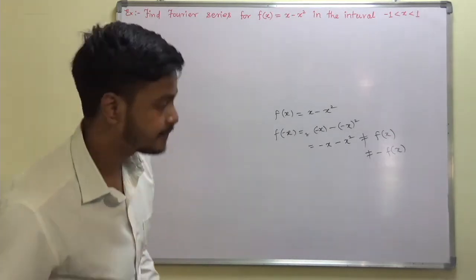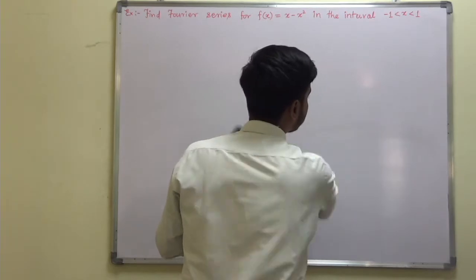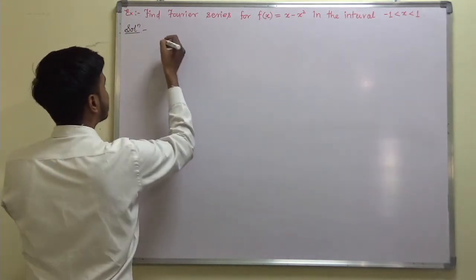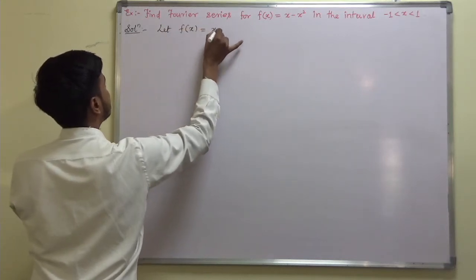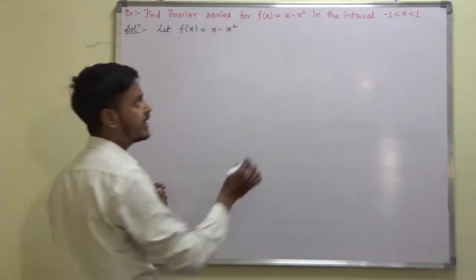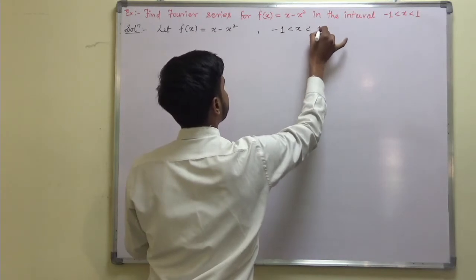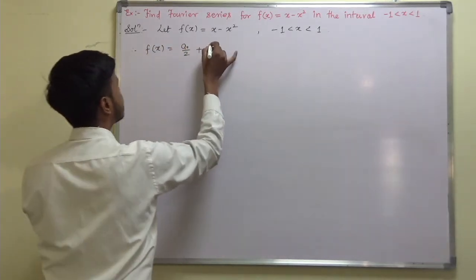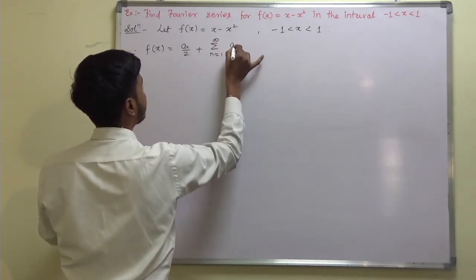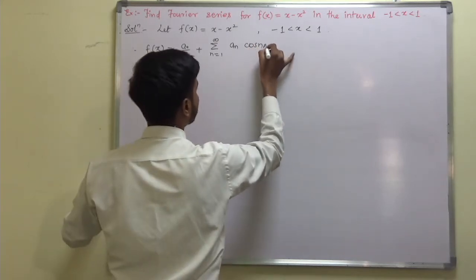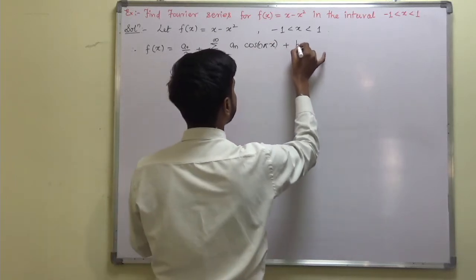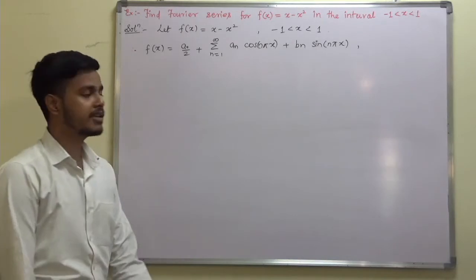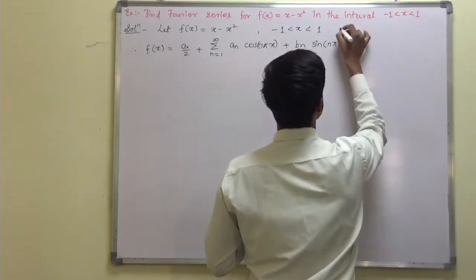So let us see this problem. Since the function is neither even nor odd, write down the full Fourier series. Let f(x) = x − x², for −1 < x < 1. Therefore f(x) = a₀/2 + summation from n = 1 to infinity of aₙ cos(nπx) + bₙ sin(nπx). Call this equation 2, the required Fourier series.